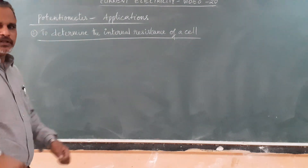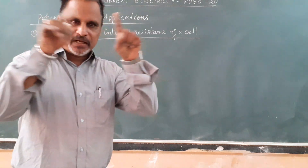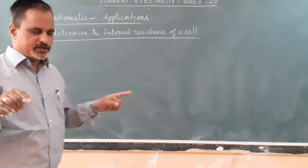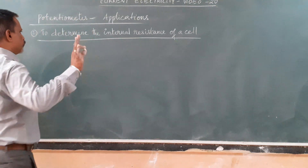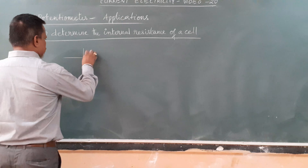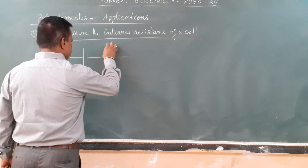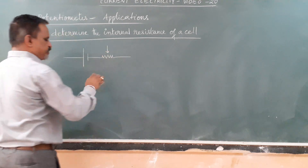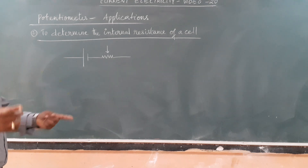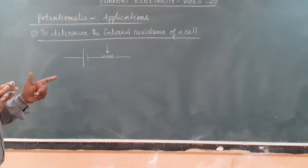The circuit diagram for the primary part will be common in all the applications. The primary circuit will be the battery and the rheostat — the same arrangement you will see in practicals also. The practicals also have the same arrangement.